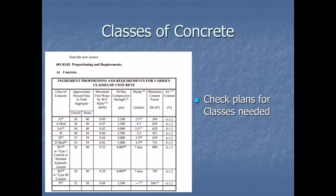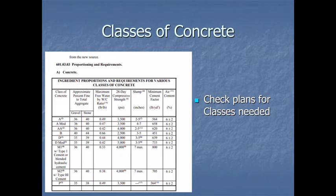Class B concrete is a general concrete with a lower psi at 2500, used in retaining walls and mass concrete. Class D and D mod are used in precast structures. M1 and M2 are our maintenance concrete used on bridge maintenance jobs for joint replacements and joint elimination — higher strength, higher slump, fast setting, and can get traffic opened up quickly. Class P is for pavement mixes. For more detail, refer to the 500 sections of the spec book.